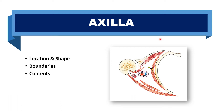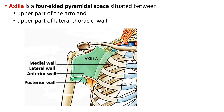This video is on the axilla. We will look at the exact location and shape of the axilla, then the structures which form its boundaries, and finally the contents of the axilla. Axilla — in layman's terms it is called the armpit. Axilla and armpit are synonymous. It is a pyramidal-shaped space, and this pyramid is truncated above, so it has an apex which is not very sharp, a base, and four walls. It is located between the upper part of the arm laterally and the upper part of the lateral thoracic wall medially.